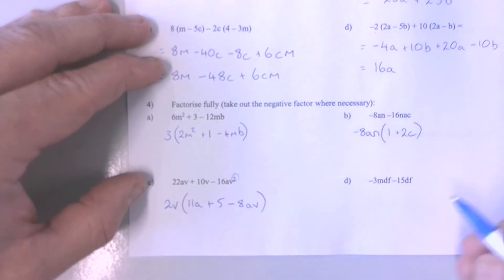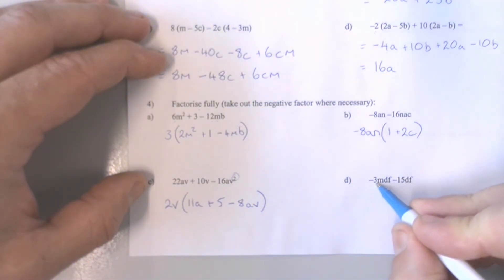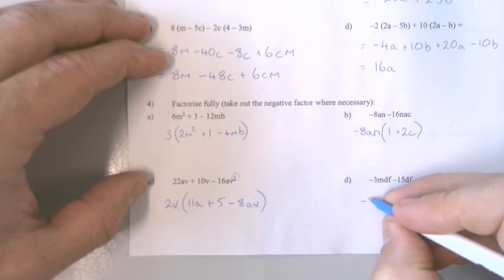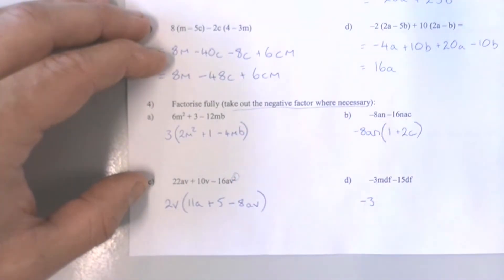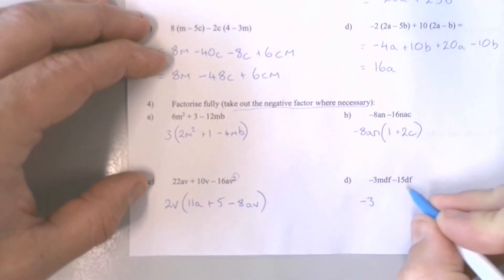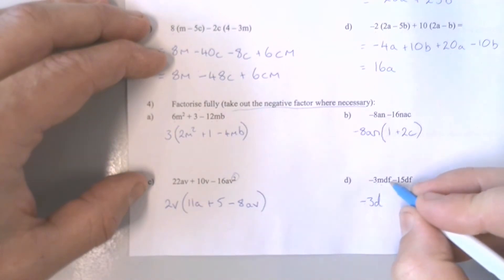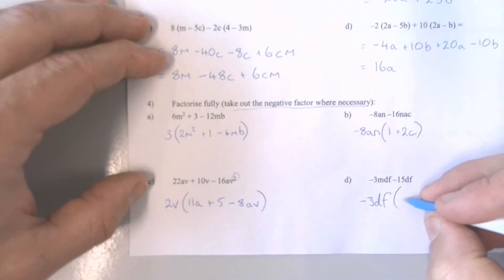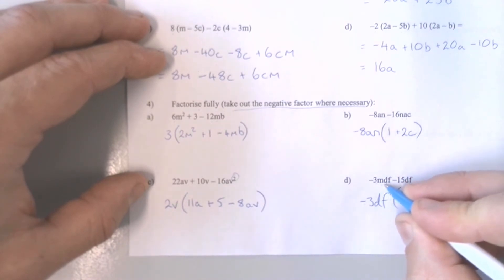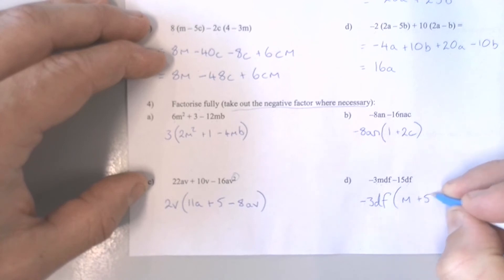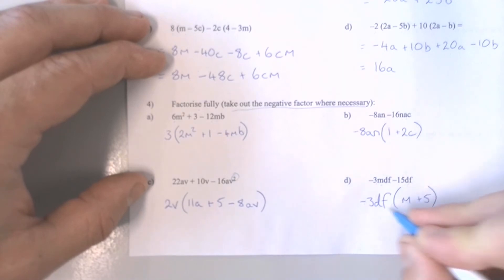Question 4D — we're looking to fully factorise, so I'm looking for all common factors. I can see that negative 3 will go into negative 3 and into negative 15, so I'll take that out the front. Don't forget that this minus is necessary — it says up here that you've got to take out the negative factor where you can. Now M is not in both of these terms so it will have to stay in the brackets. D can come out the front because it's in both terms. F can also come out the front. In the brackets we're left with M — because negative 3DF times M makes negative 3MDF — and then we've got a positive 5, because negative 3 times positive 5 makes negative 15, and then DF transfers up there.